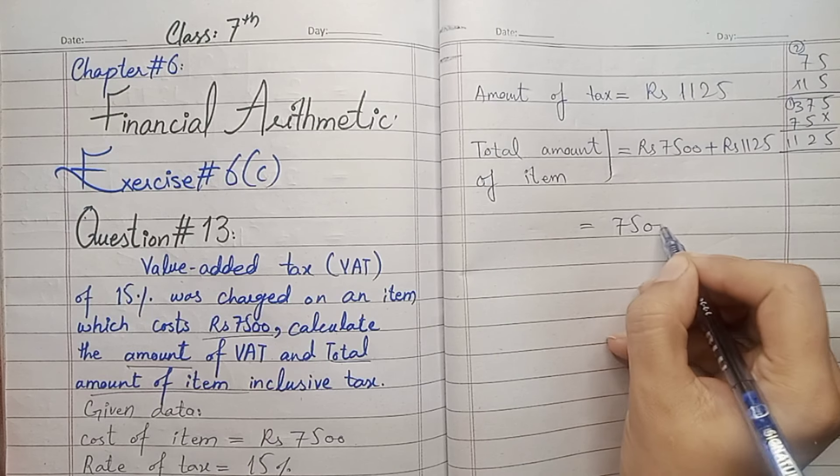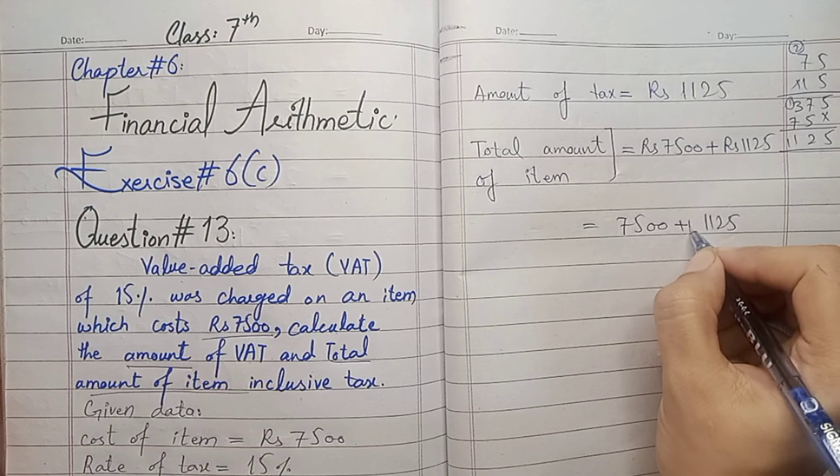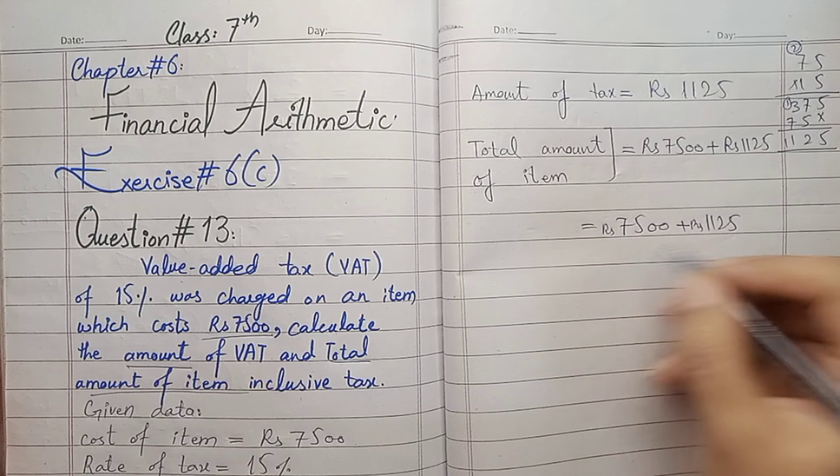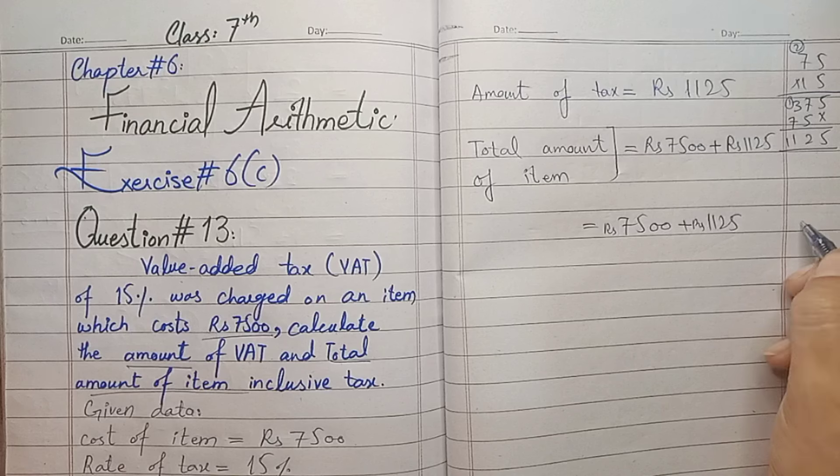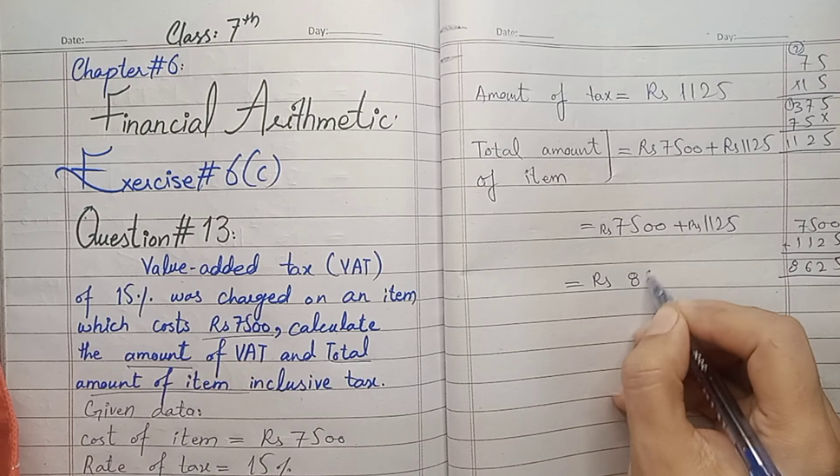We will add 7,500 and 1,125. When we add these two items, we get 8,625.